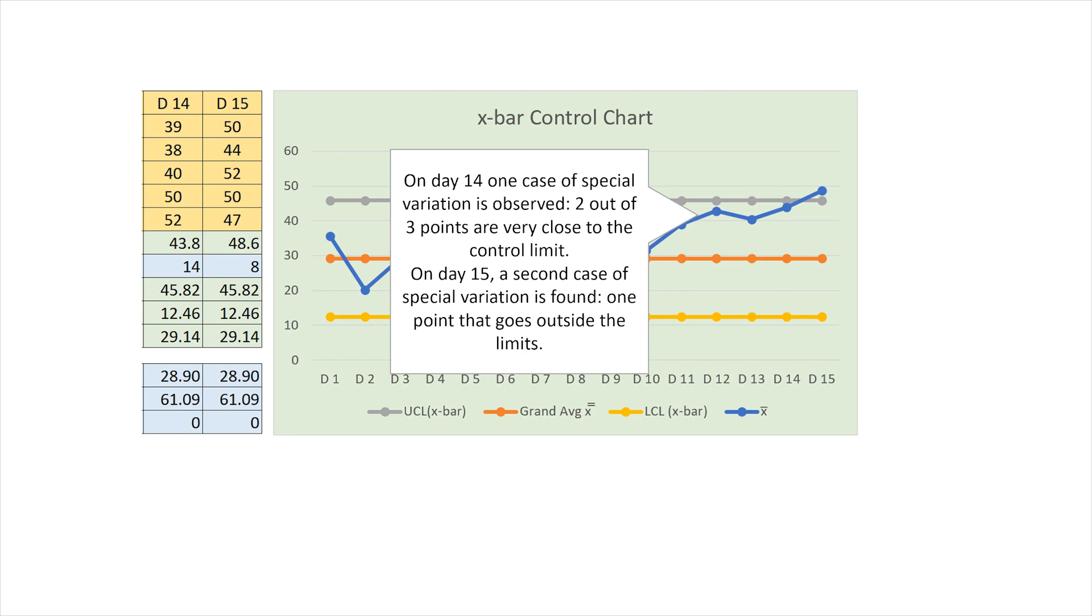When we observe signals such as two out of three observations too close to the limits, as we can see here, or one value outside the limits, such as this one, we must investigate and look for the changes that created these abnormal behaviors. These changes are called special causes of variation. Once these causes are understood, we seek to eliminate them if they are undesirable, or make them part of our work if they are desirable.